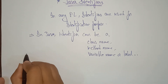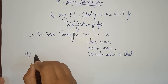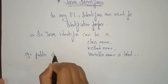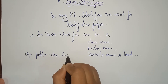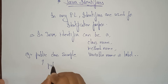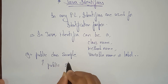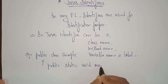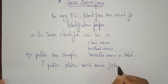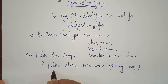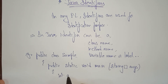Let me take an example. This declaration — everything you don't understand right now, that's okay. While we are working on Java, you will get clarity on these things. The public, static, void, main — why we use these, you can understand in the coming videos. Here I just want to explain what an identifier is.